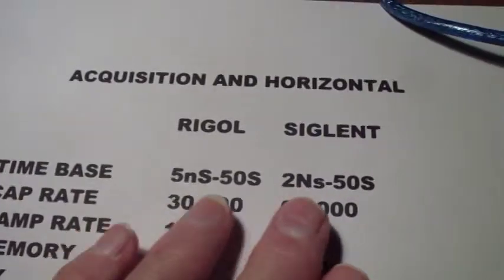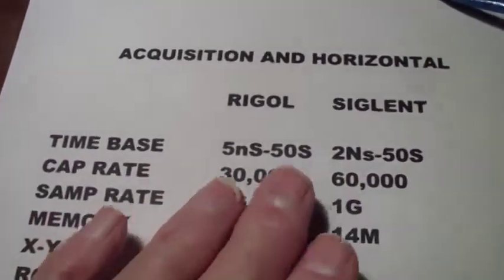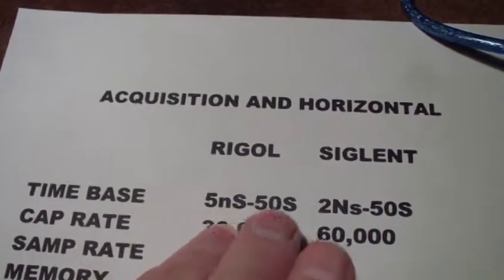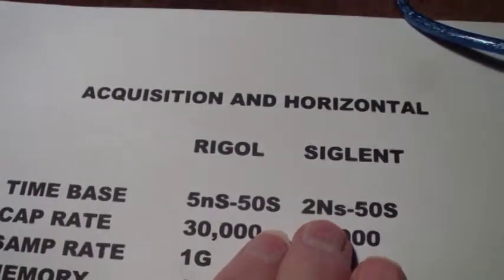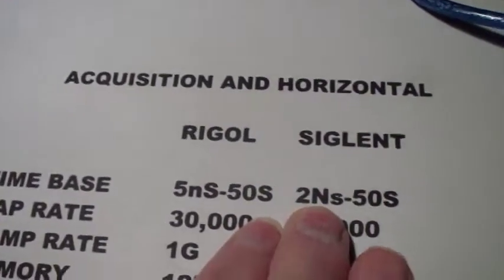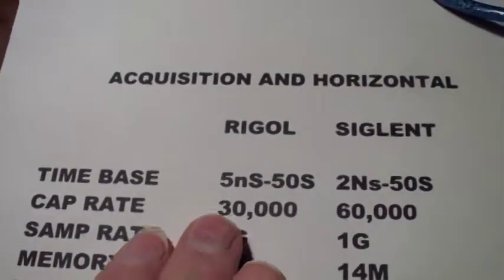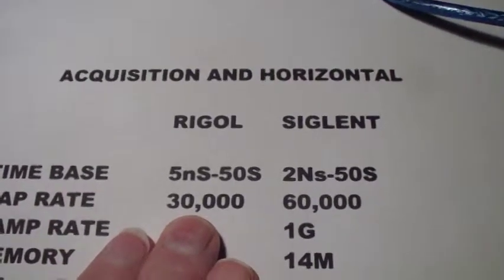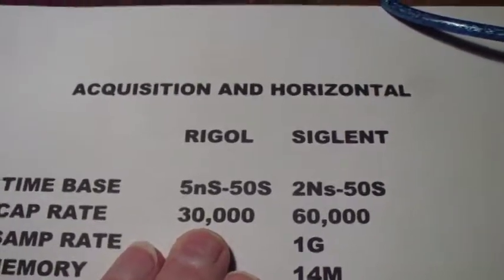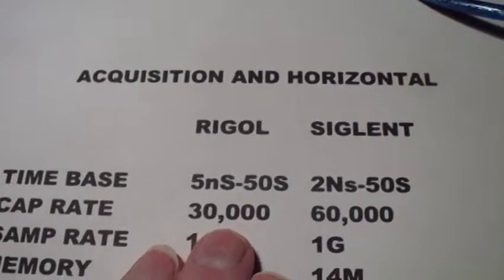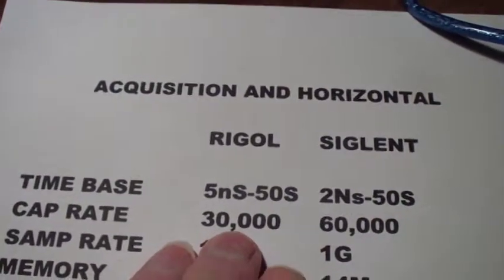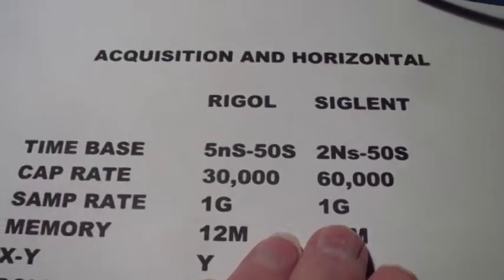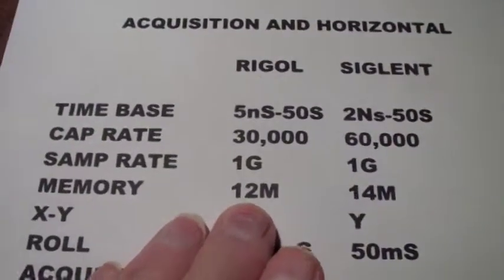Here are the published specifications — I haven't verified these. The Rigol time base can go down to 5 nanoseconds per division and up to 50 seconds per division. The Siglent can go down to 2 nanoseconds and 50 seconds. The capture rate — these are published rates and will vary greatly depending on the time base selected and trigger type. This is a maximum of 30,000 waveforms per second for the Rigol versus 60,000 for the Siglent. They both sample at 1 gigasample per second.